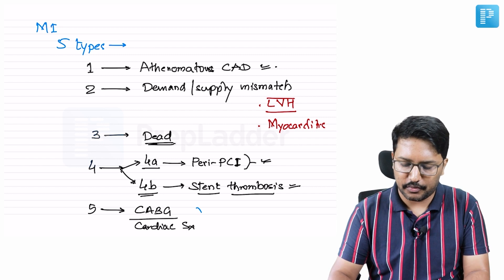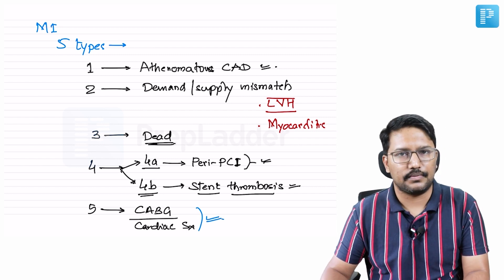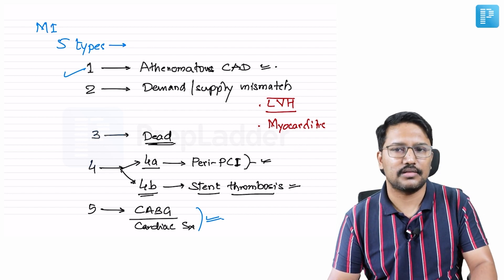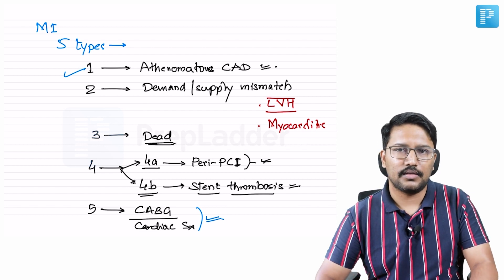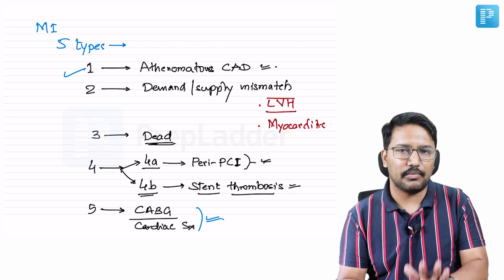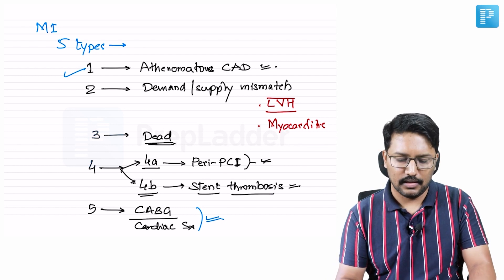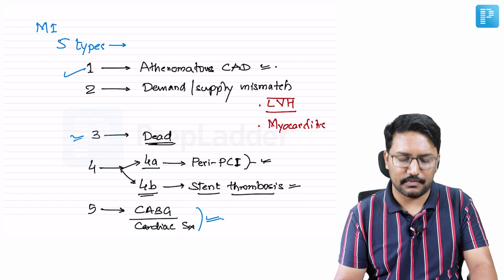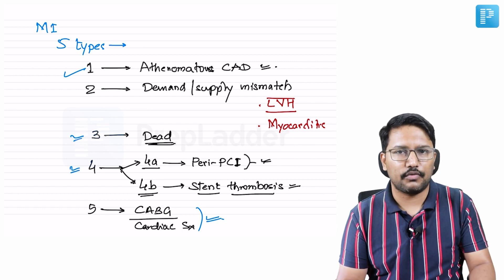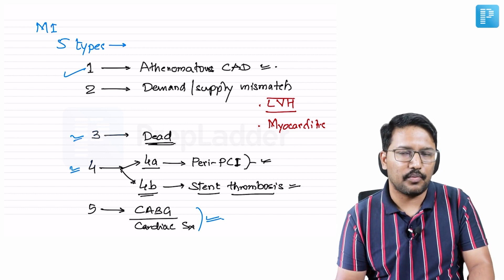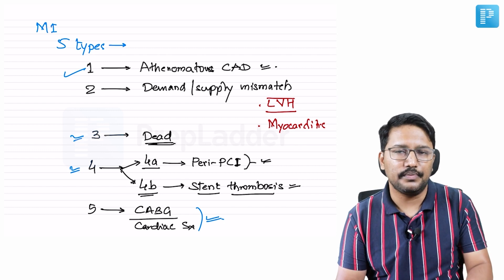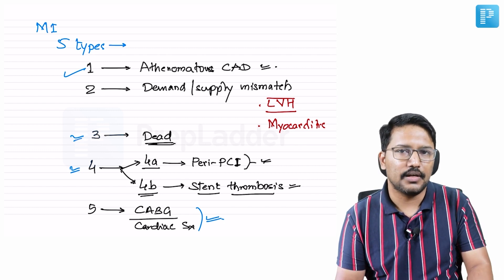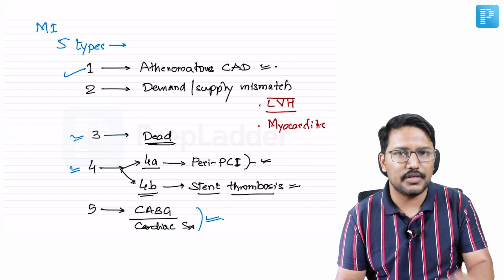To summarize: Type 1 — atheromatous coronary artery disease. Type 2 — no atheromatous CAD, demand and supply mismatch. Type 3 — patient is dead and circumstances suggest myocardial infarction. Type 4A — complication of PCI as a procedure; Type 4B — stent thrombosis. Type 5 — complication of CABG or cardiac surgery.